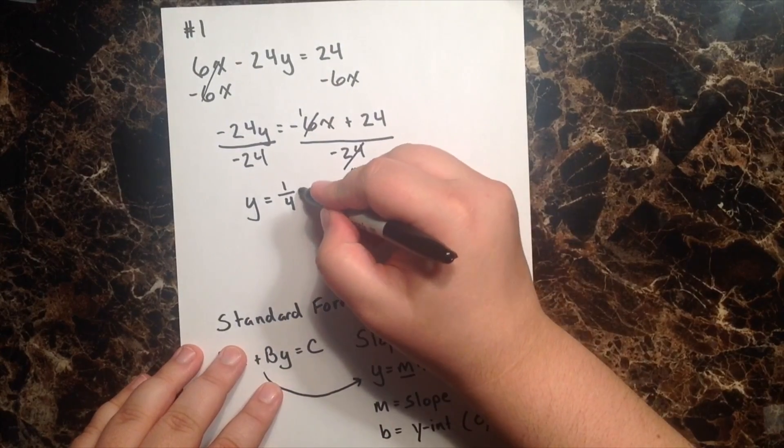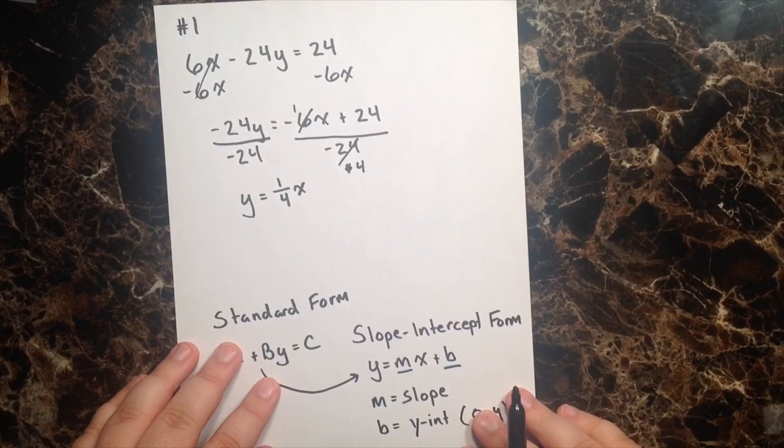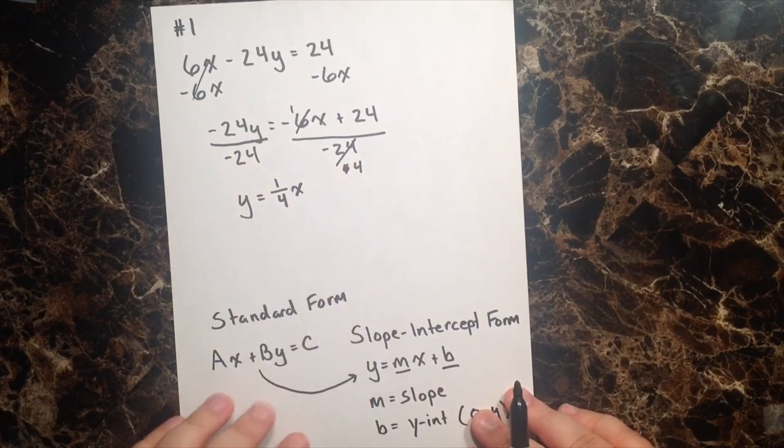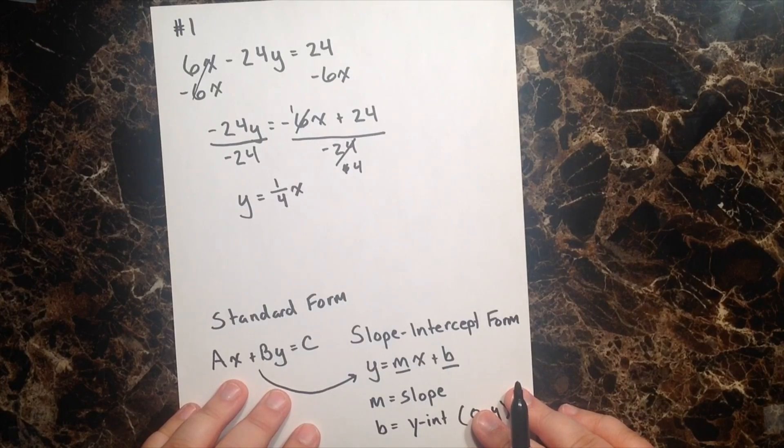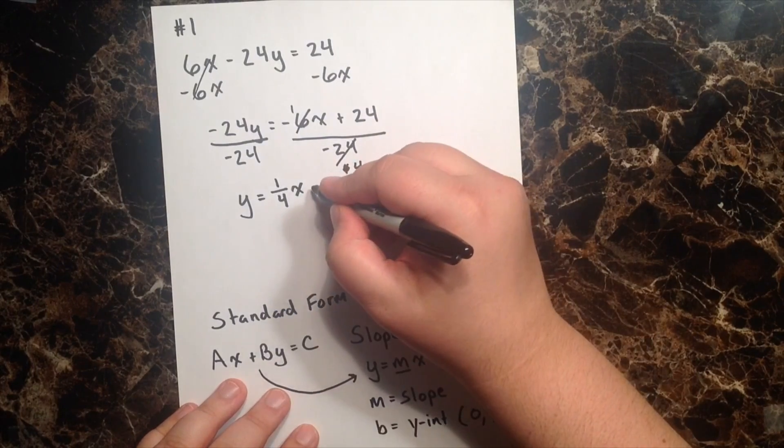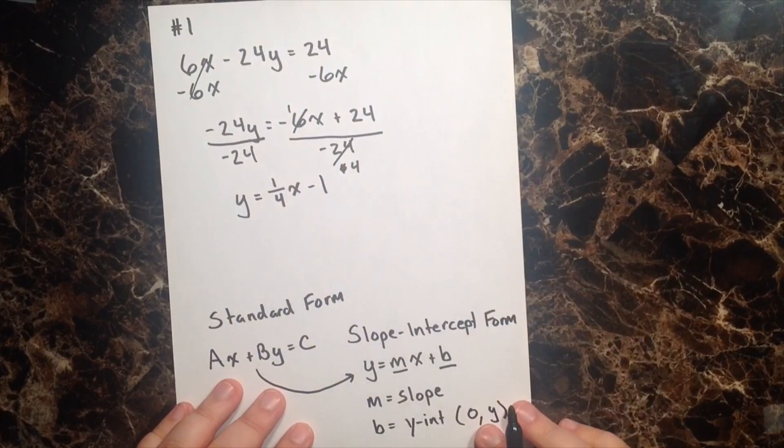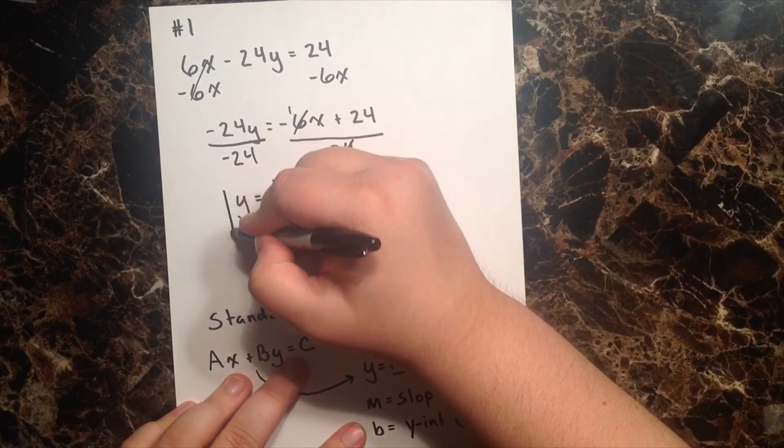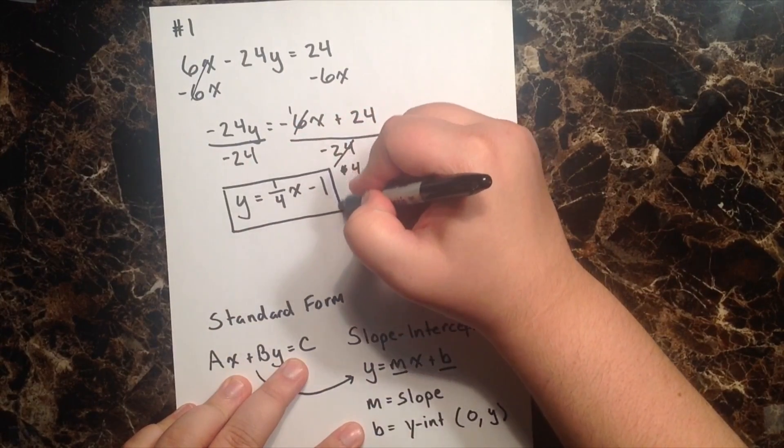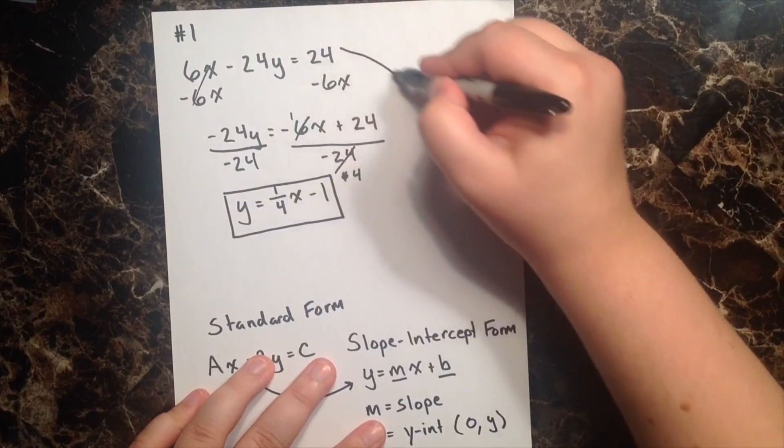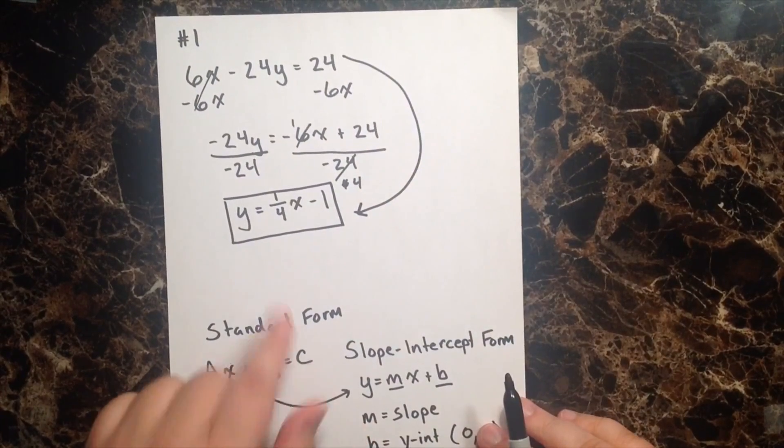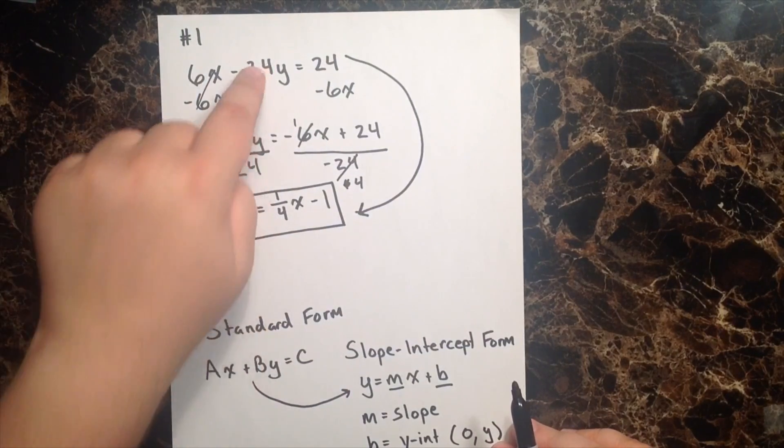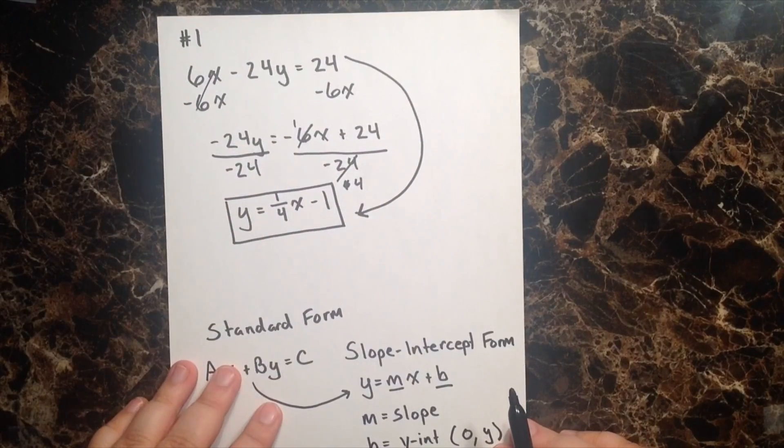And 6 goes into 24 four times. And I'm going to make sure that I put my x in. And then finally, I have a positive 24 divided by a negative 24. And we know that a positive divided by a negative is simply a negative. And 24 goes into itself just one time. And so when we rewrite the given equation in slope-intercept form, this is what we get. Now, these two equations are exactly identical. They're just in different forms.